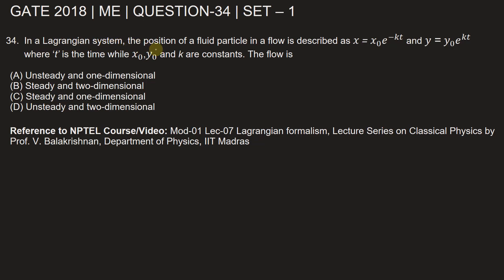In a Lagrangian system, the position of a fluid particle in a flow is described as x equals x-naught e to the power of minus kt, and y equals y-naught e to the power of kt, where t is time while x-naught, y-naught, and k are constants. The four options given are: unsteady and one-dimensional; steady and two-dimensional; steady and one-dimensional; or unsteady and two-dimensional. We need to choose the correct one.